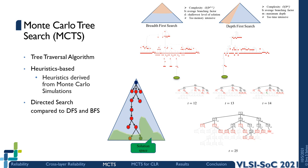Monte Carlo tree search is a heuristics-based tree traversal algorithm where the heuristics are obtained from Monte Carlo simulations of the design decisions. Here we can see the two more traditional exhaustive search methods, breadth-first search and depth-first search, and their exploration in finding the solution for a Sudoku problem. Comparatively, Monte Carlo tree search presents a more directed search in the sense that every new node explored is based on the quality of nodes explored previously, with quality estimated via Monte Carlo simulation of the design decisions. With MCTS, every new iteration starts from the root node and the estimation results of any arbitrary node are back-propagated to the root node.